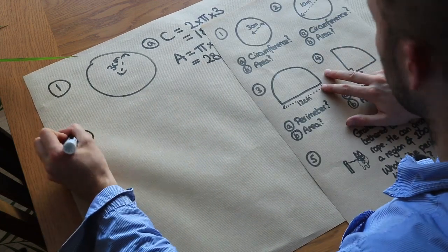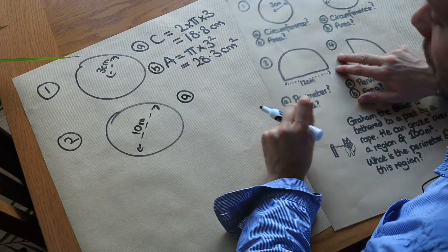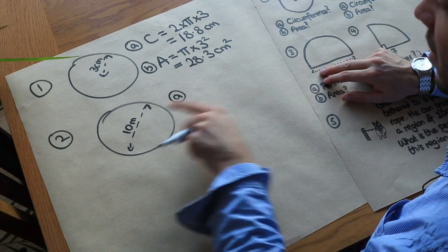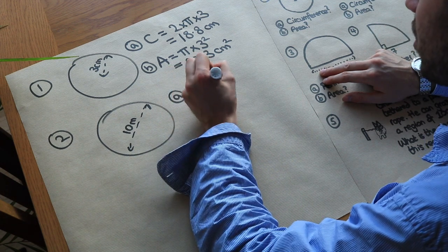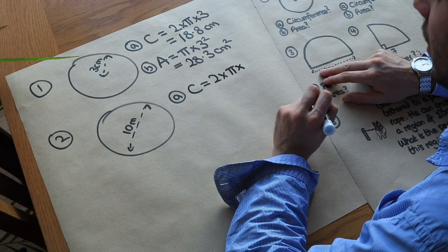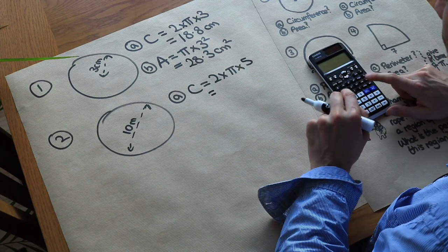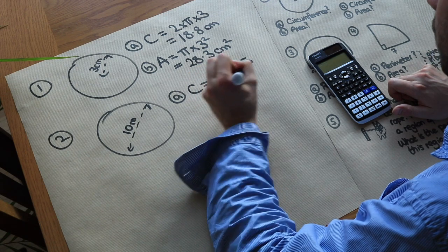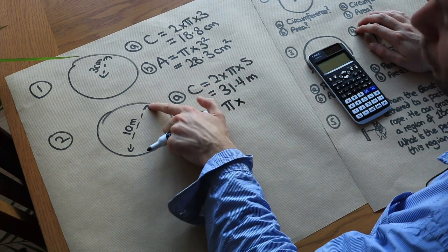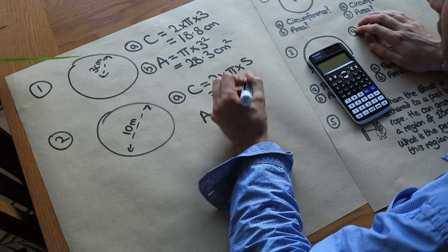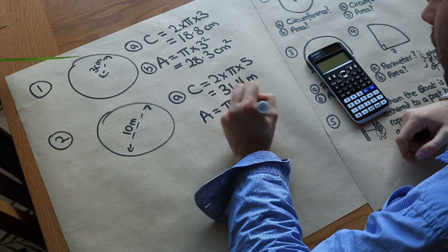Now this second problem: we're given a circle with diameter 10 meters. For the circumference, we could use πd, but it's easy to use 2πr where the radius is half of 10, which is 5. So the circumference is 2 times π times 5, giving 10π, which is 31.4 meters. For the area, it's πr² = π times 5 squared = π times 25, giving 78.5 meters squared.